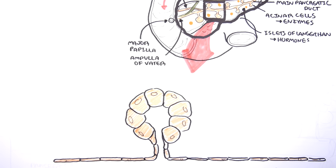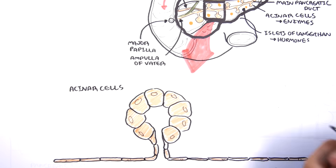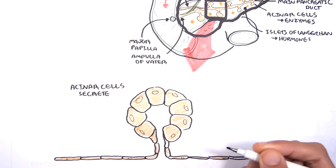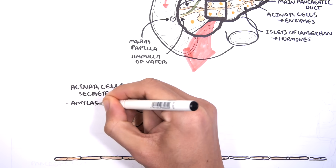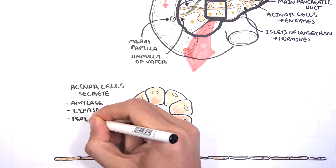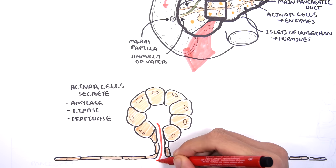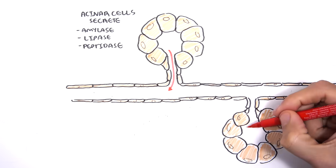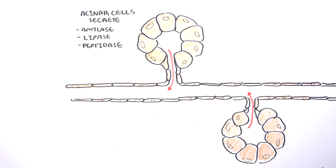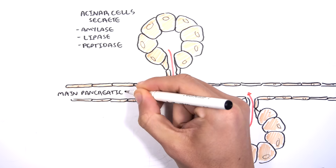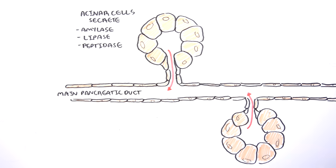The acinar cells make up the exocrine function of the pancreas. They secrete enzymes such as amylase, lipase, and peptidase into the main pancreatic duct, which then carries them into the duodenum to help with the digestion of food.